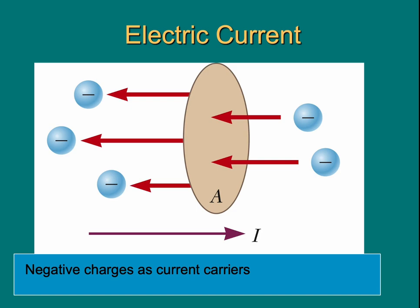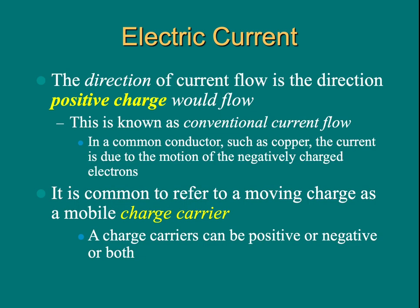In metals, electrons are much easier to move than positive charged nucleus. So in metals, the electric current is generated by negative charge. The direction of current flow is the direction of positive charge would flow. This is our conventional definition of current flow.